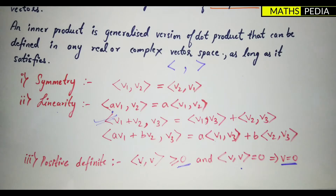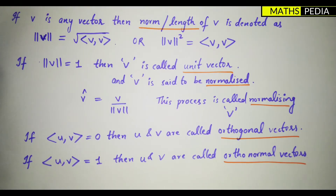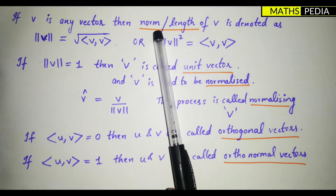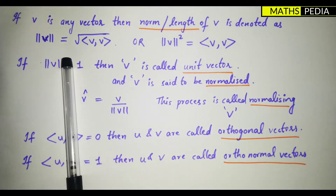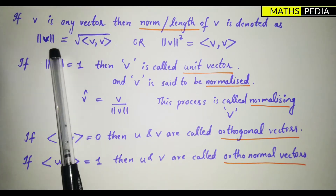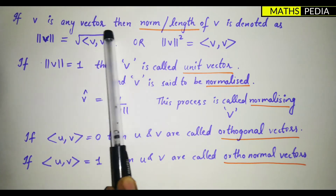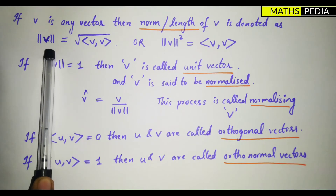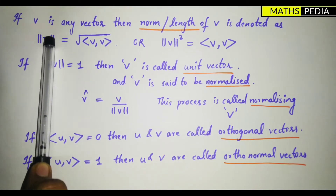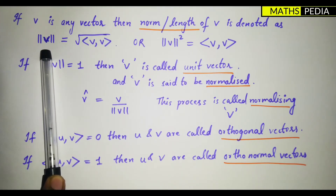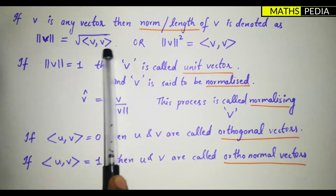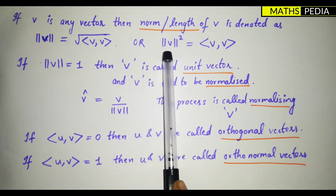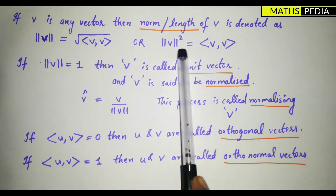Before solving problems, here are some important points. If v is any vector, the norm or length of v is denoted by double vertical lines around v. It is calculated as the square root of the inner product of v with itself. In other words, the square of the norm of v equals the inner product of v with itself, which must be greater than or equal to zero.